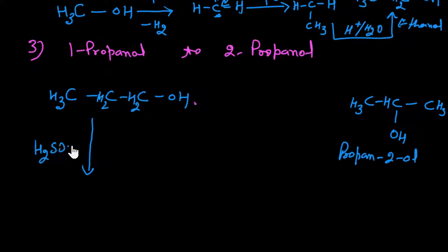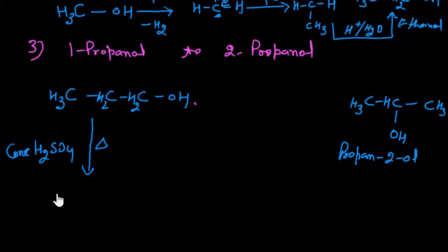We can use dehydration of alcohol with concentrated sulfuric acid. The dehydration reaction of alcohol with concentrated H₂SO₄ gives an alkene, with elimination occurring at the alpha position. It's important to understand and revise all the reactions before doing conversions, so that we know which reaction to apply at each step.